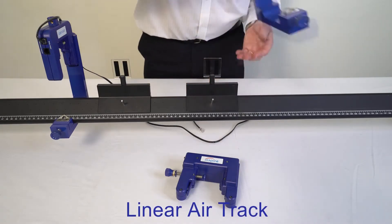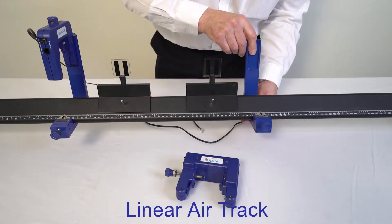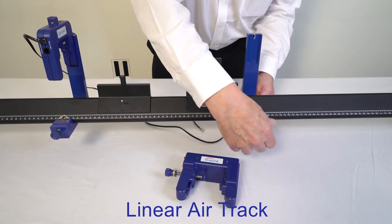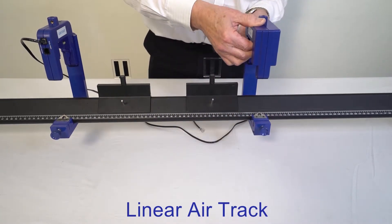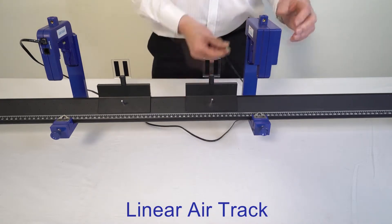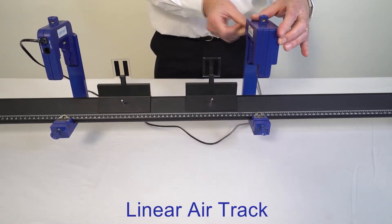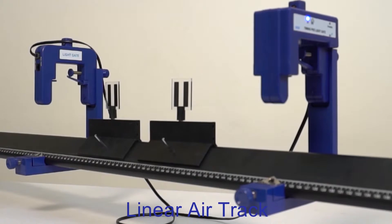Using the special clamps, the light gates may be attached to the linear air track. All the familiar air track experiments can be captured with the light gates and Timing Pro software.